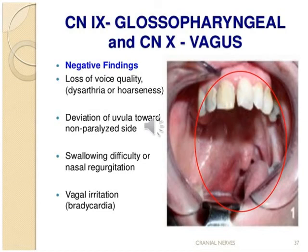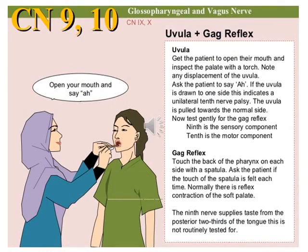Abnormalities that may be found include loss of voice quality, dysarthria, or hoarseness of voice. During examination, we may find deviation of the uvula towards the non-paralyzed side, and the patient may have swallowing difficulties or nasal regurgitation. During examination, we ask the patient to open his mouth and use a torch to see the uvula. If it is in the midline, this is normal; if it is deviated to one side, it is pulled by the normal side. We then examine the gag reflex by gentle touch of the posterior pharyngeal wall.